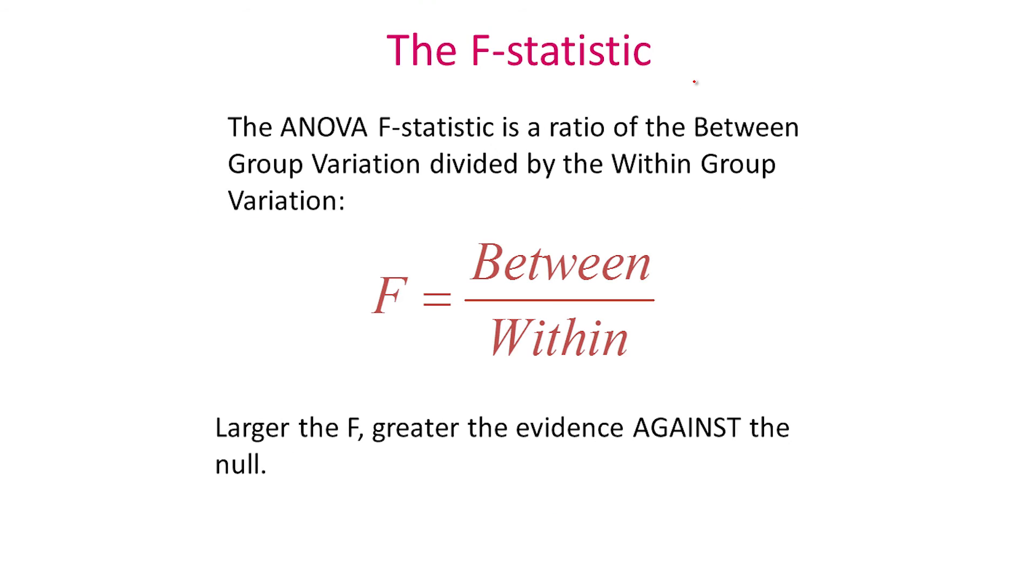Now, here's the basic idea pushed forward. If the between group variation is large and the within group variation is small, that is evidence against the null. Basically, this ratio, F, says that the variation between groups, between condition 1 and condition 2 and condition 3, is larger than the variation within each condition. And that is suggesting that, in fact, these groups are indeed different or these conditions are indeed different from each other. So, F represents the F statistic in ANOVA. And it's the ratio of the between group variation divided by the within group variation.